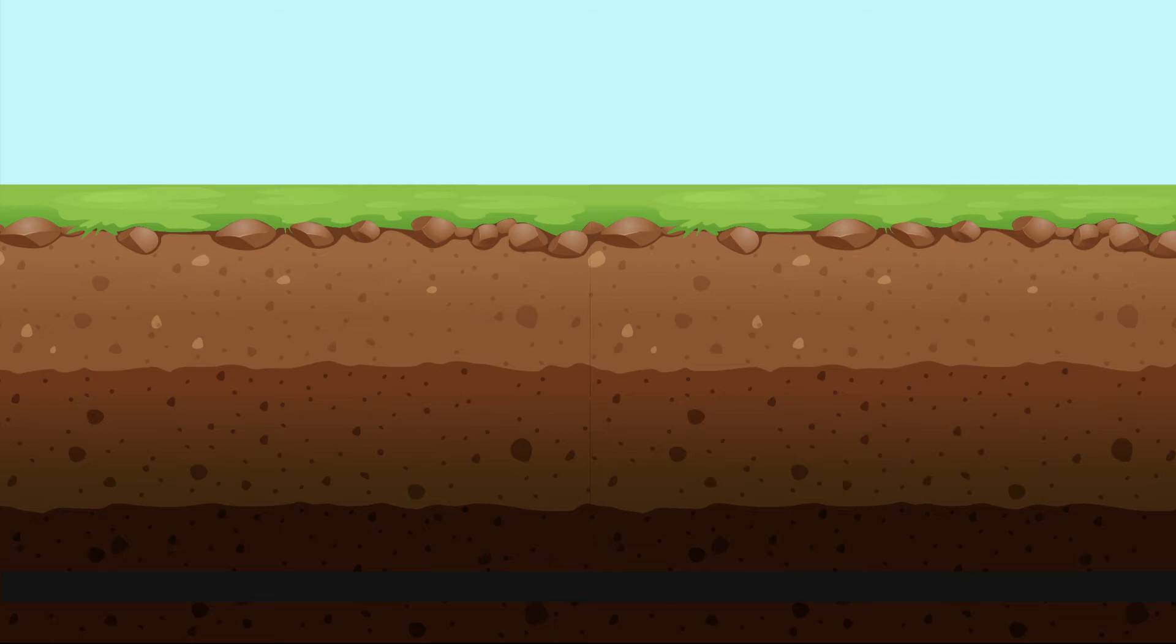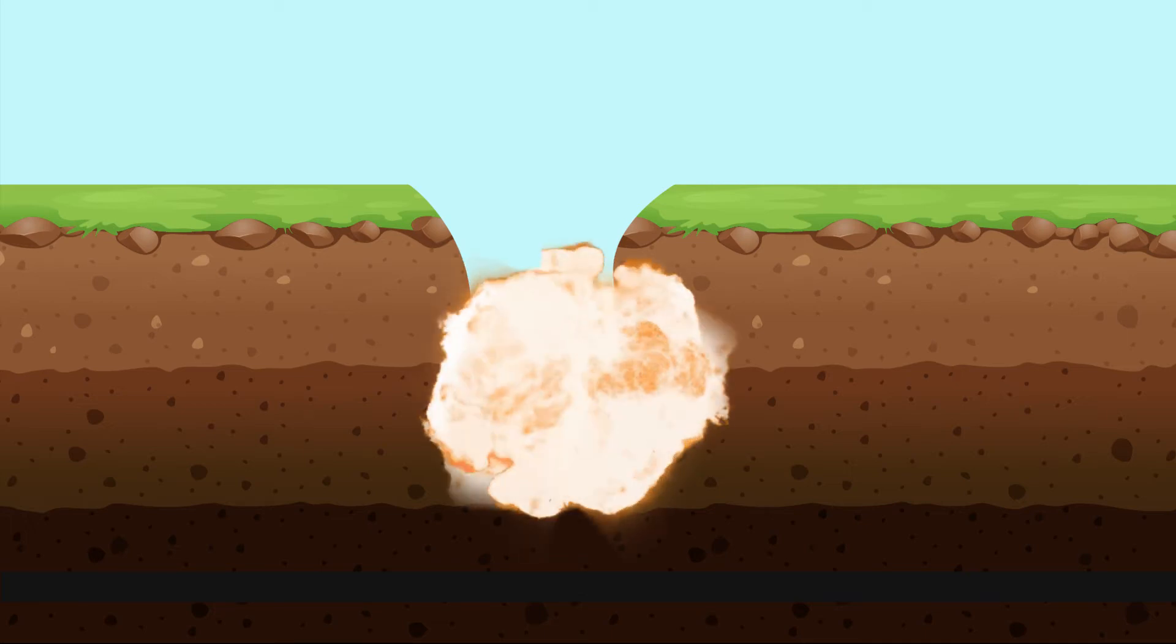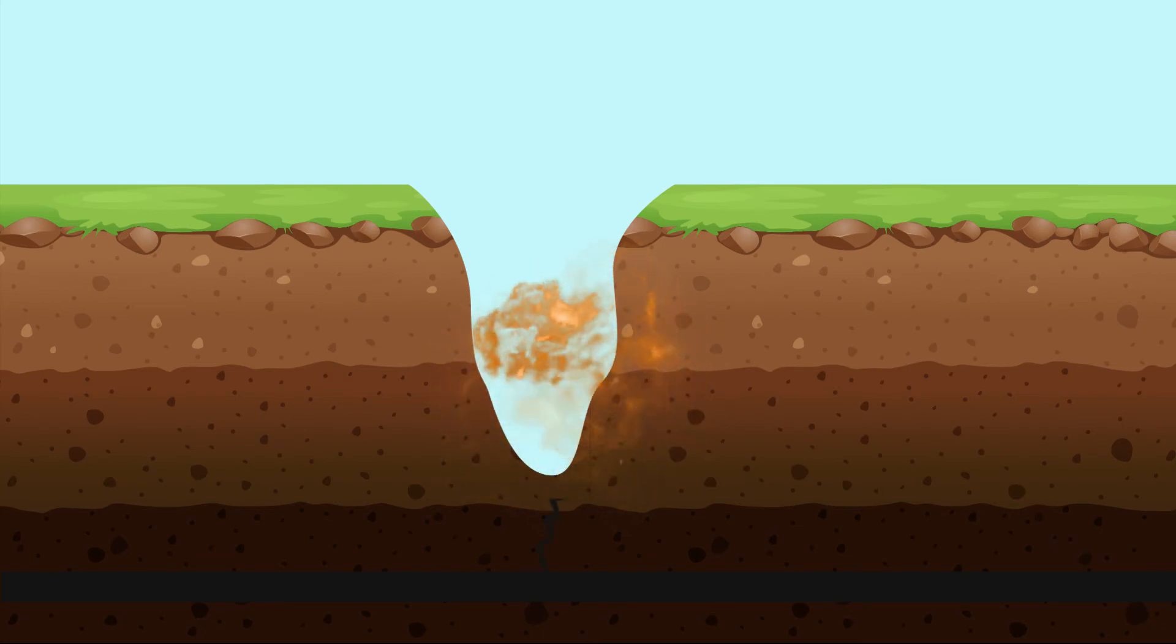In the 1860s, Civil War veteran Colonel Edward A.L. Roberts reportedly came up with an idea that would revolutionize that collection process. Taking inspiration from the battlefield, he designed an exploding torpedo to be placed in an oil well. Once detonated, the rock would shatter and oil flow would increase exponentially.